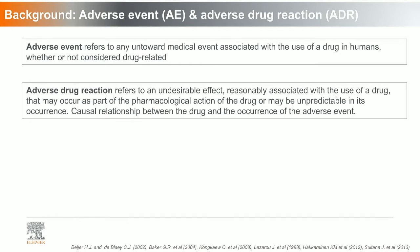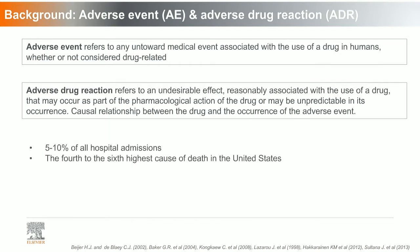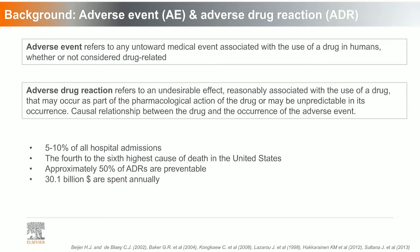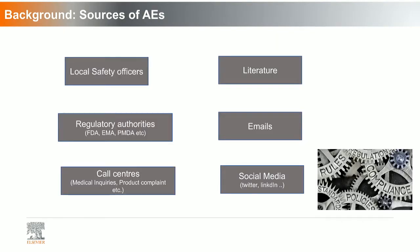These adverse reactions have been accounted for around 5 to 10 percent of all hospital admissions and are the fourth to sixth highest cause of death rates in the United States. Approximately 50 percent of adverse reactions are preventable, but we are still spending a lot of money annually to monitor them. There are several sources where these adverse reactions are reported: spontaneous reports from local safety officers, literature, FDA drug labels from regulatory authorities, emails, medical inquiries, product complaints in call centers, and people also tweet about adverse reactions on social media.